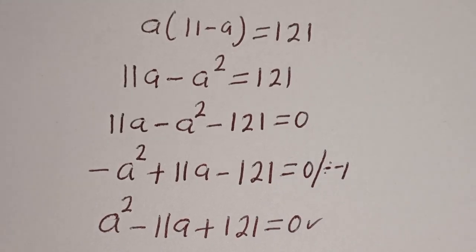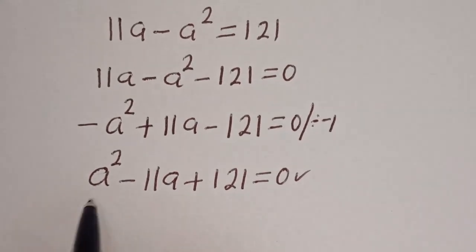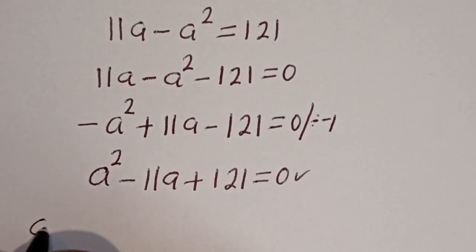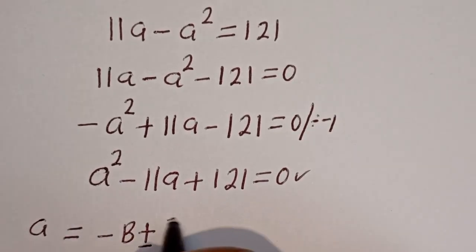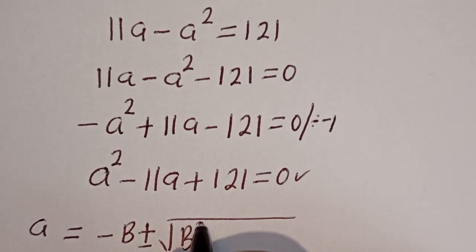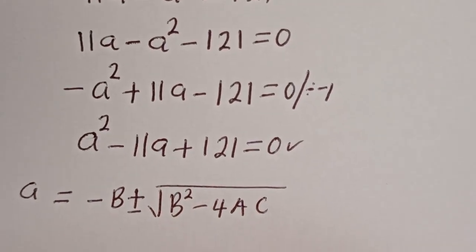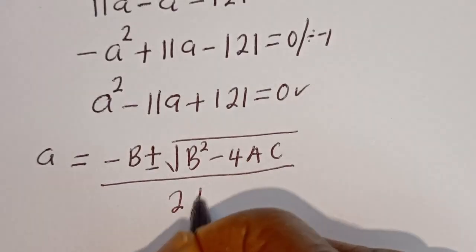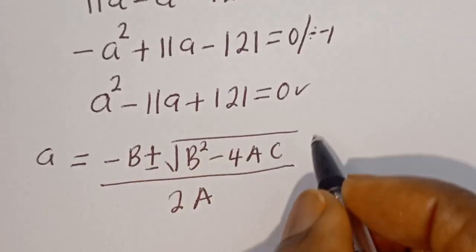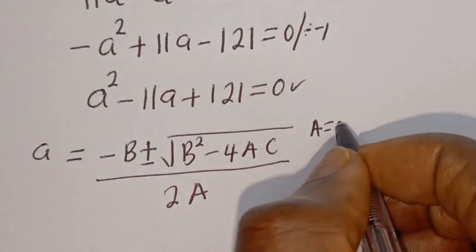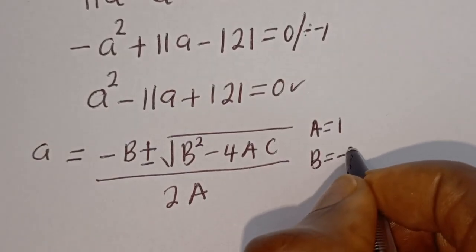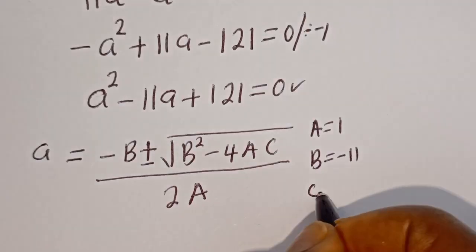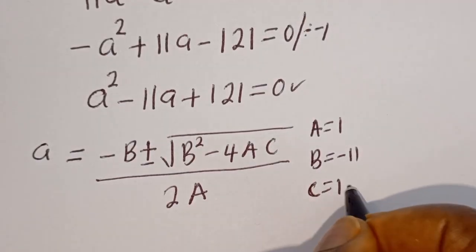This is a quadratic equation. Let's solve this using the quadratic general formula: A equals minus b plus or minus square root of b squared minus 4ac, divided by 2a. From this equation, a equals 1, b equals minus 11, c equals 121.